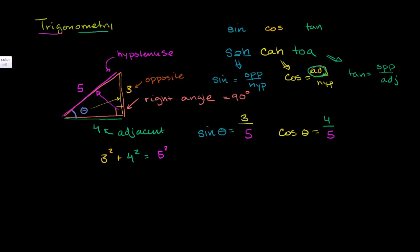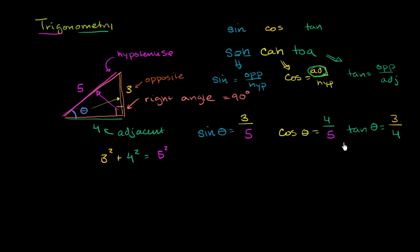Now let's do the tangent of theta. Tangent is opposite over adjacent. The opposite side is 3, and the adjacent side is 4. So tangent of theta equals 3 over 4. Knowing the sides of this right triangle, we were able to figure out all the major trig ratios. There are other trig ratios, but they can all be derived from these three basic trig functions.